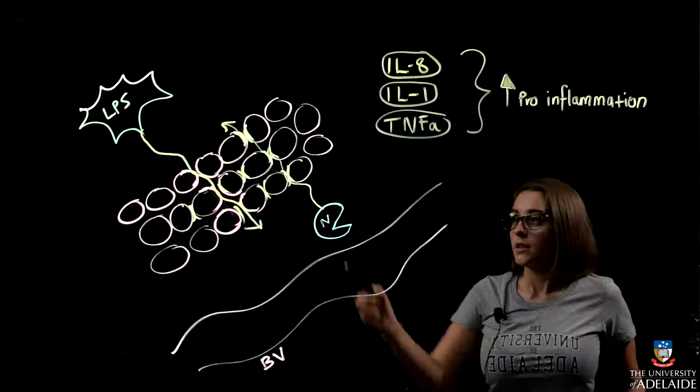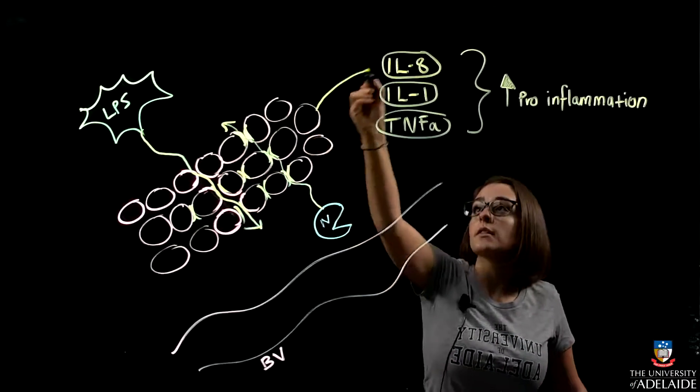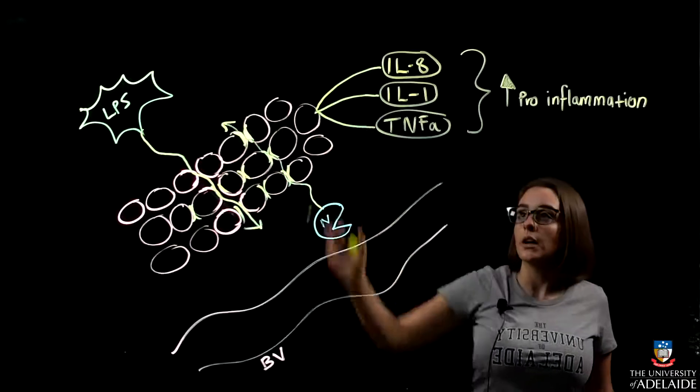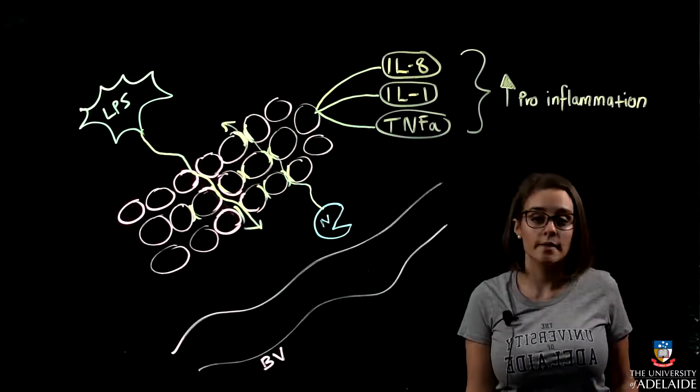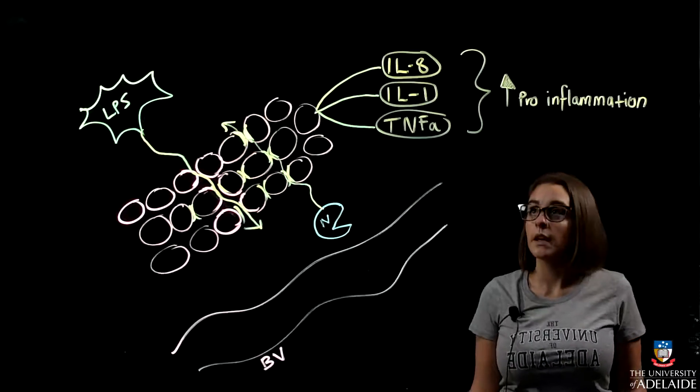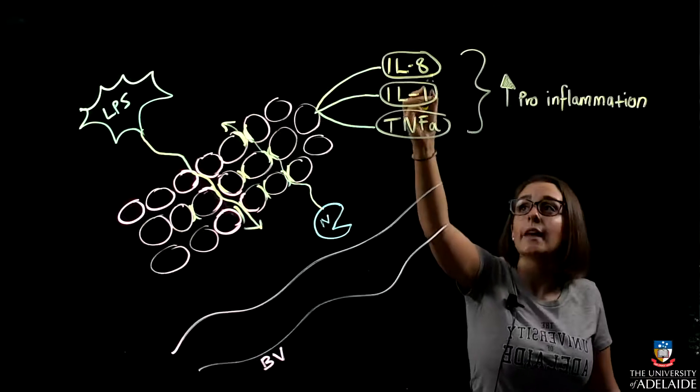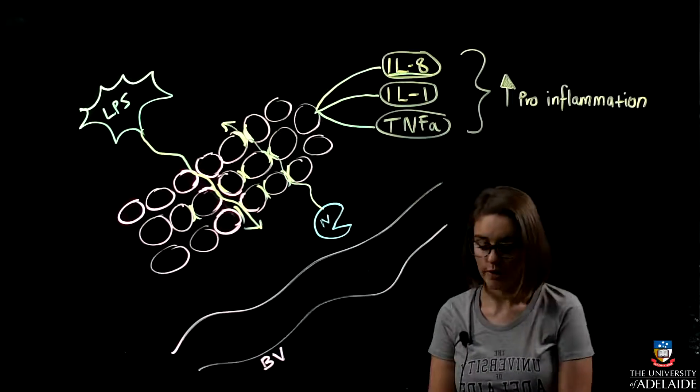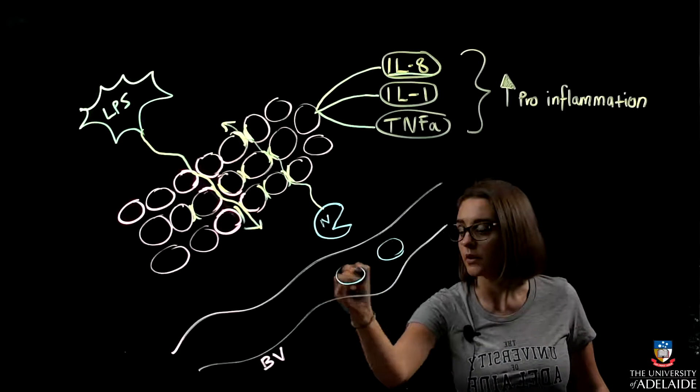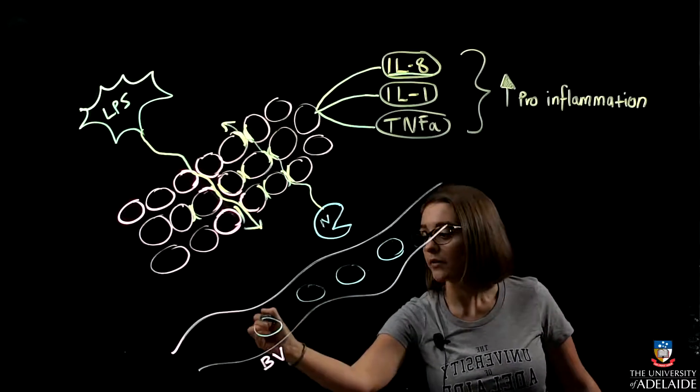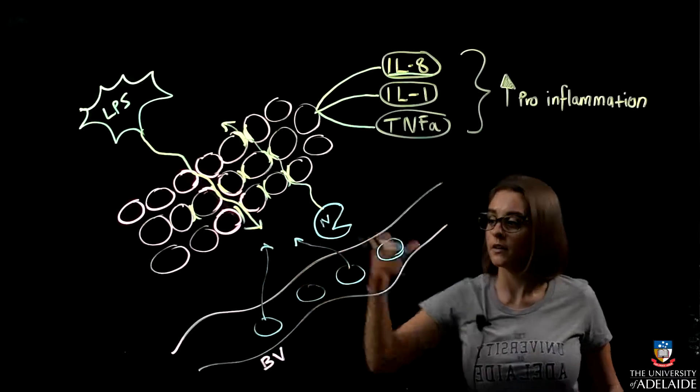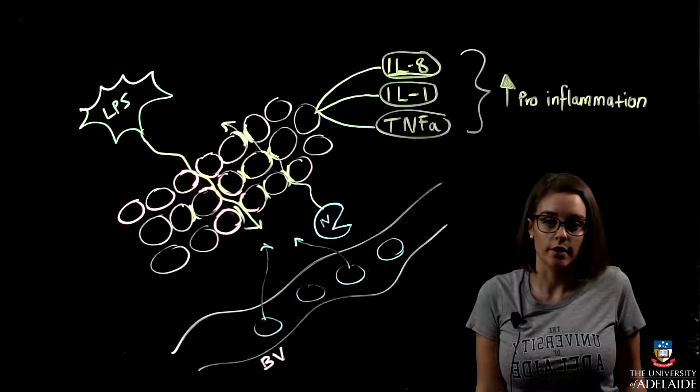When there is an invasion, the junctional epithelium creates cytokines such as interleukin-8, interleukin-1, and tumor necrosis factor alpha, and these all promote inflammation and upregulate everything. It's also very important to understand that interleukin-8 mainly communicates with underlying blood vessels and the neutrophils in these blood vessels and tells them to migrate out of the blood vessels into the area of attack. This is known as the first line of defense.